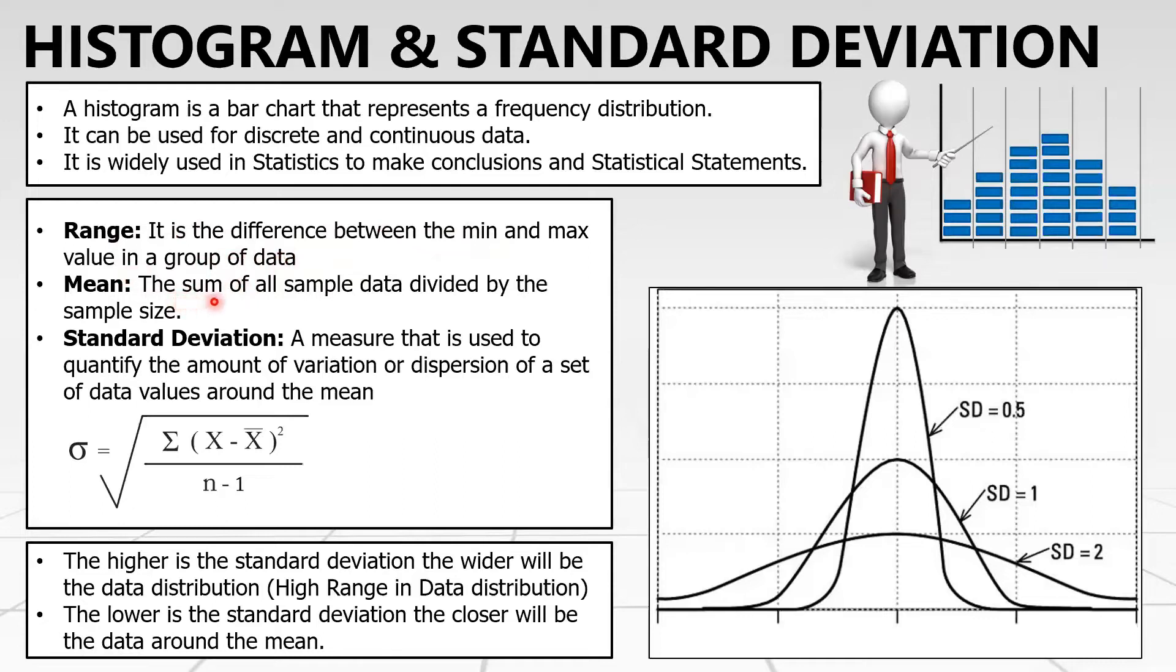The mean is the sum of all sample data divided by the sample size. The standard deviation is a measure used to quantify the amount of variation or dispersion of a set of data values around the mean. It sounds complicated, but when the standard deviation is small, we have a closer data distribution to the mean. When the standard deviation is high, we have a wider data distribution.